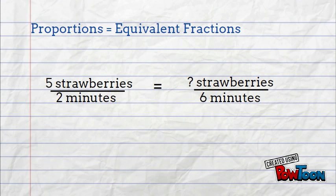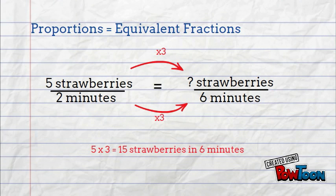In this example, to go from 2 minutes to 6 minutes, we multiply by 3. So to solve for our unknown, we do 5 times 3, which is 15 strawberries in 6 minutes.